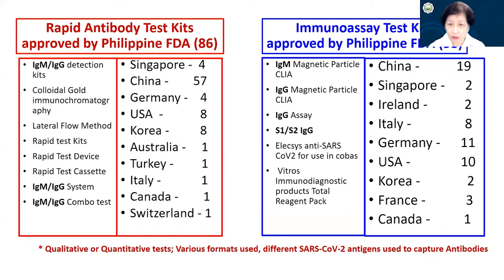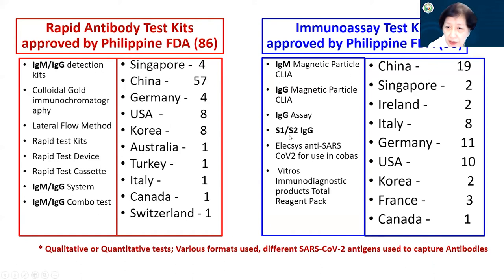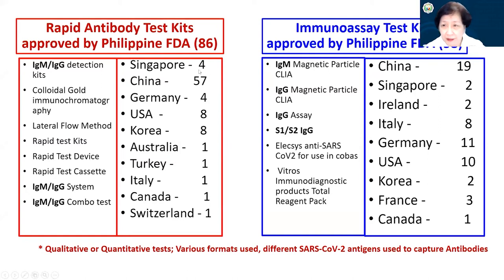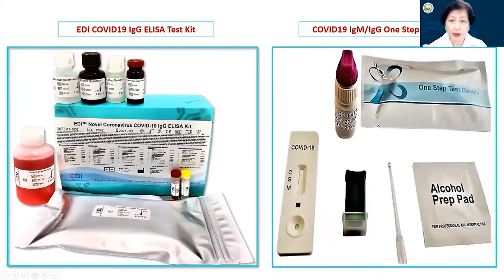These immunoassay kits can detect IgM alone, IgG alone, both, or total antibodies. One particular kit detects antibodies directed at very specific subunits of the spike: S1 and S2. Some of the countries that have exported their products to us include China — the leader — as well as Germany, the USA, Korea, and Japan for the immunoassay kits.